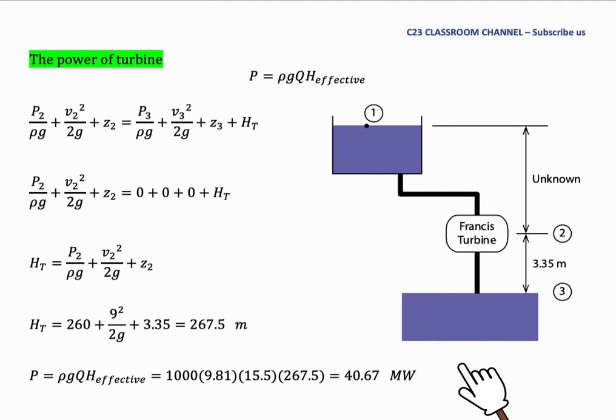Then we need to calculate the power of turbine. First, you need to draw the Francis turbine structure like this. We have a tank here and this tank has its own water level. And then this tank is connected with a pipe system like this and then goes through inside Francis turbine. And then water will release at the bottom here to another reservoir here. From the question, we know that the distance from the Francis turbine to the draft tube is 3.35 meters.